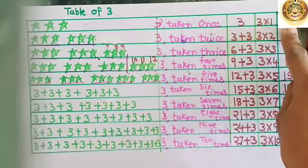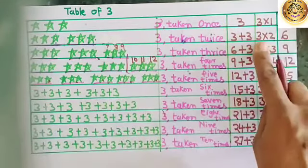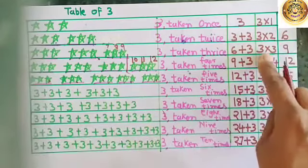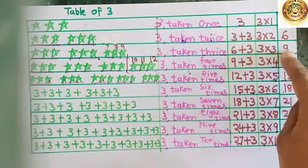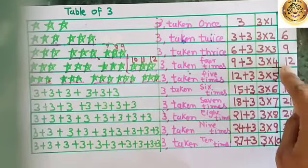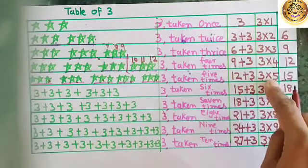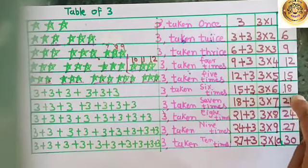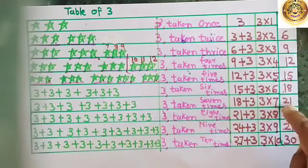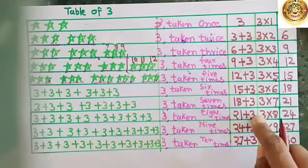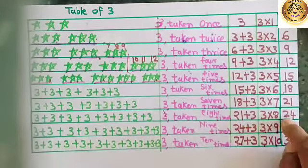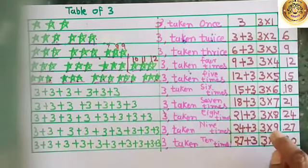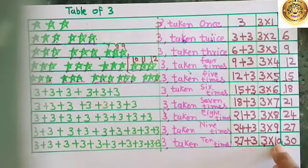3 1s are 3. 3 2s are 6. 3 3s are 9. 3 4s are 12. 3 5s are 15. 3 6s are 18. 3 7s are 21. 3 8s are 24. 3 9s are 27. 3 10s are 30.